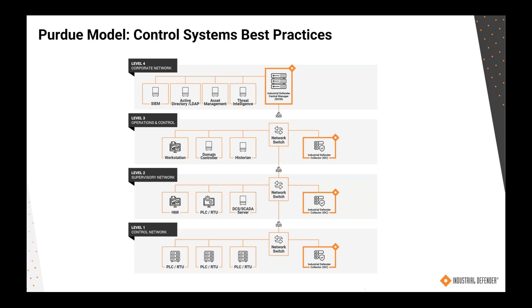There's a lower level where the OT devices like PLCs and RTUs reside, and that's called a control network — that's level one. Sometimes you'll see a level zero, which has sensors like pressure sensors and temperature sensors at that level. The servers and the supervisory OT devices, which interact with the RTUs in level one, live in level two, and that's called a supervisory network.